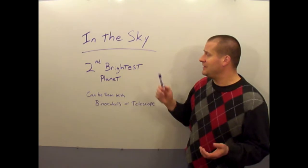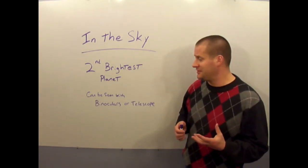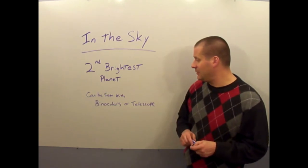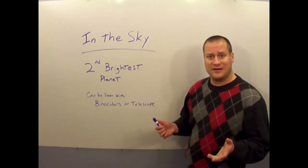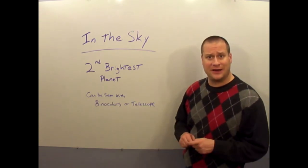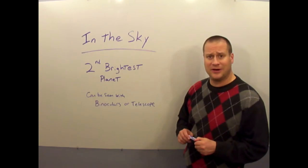If you did want to find Jupiter in the night sky, it is the second brightest planet in our solar system, and you can see it with binoculars or with a telescope. So if we catch it at the right time of year, maybe that's one of our projects, we can get out there with Sam's telescope and see if we can't locate Jupiter in the night sky.